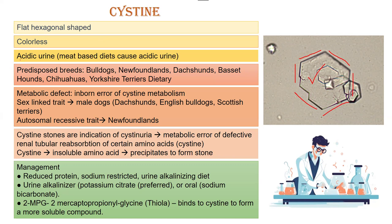They form in acidic urine. Acidic urine is basically caused by meat-based diets, so if you are feeding your animals a highly meat-based diet, there are chances of cysteine crystals forming.